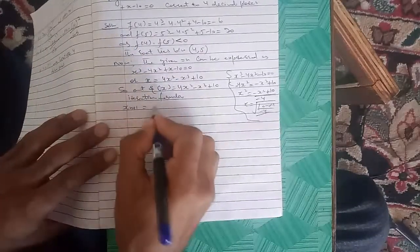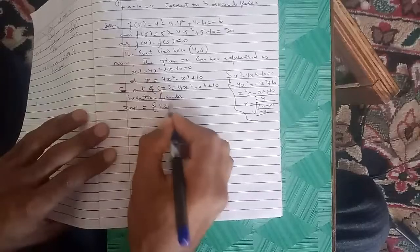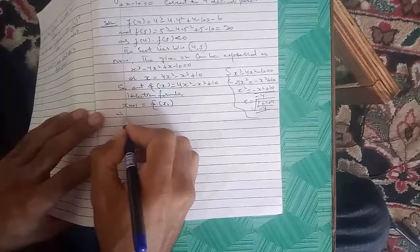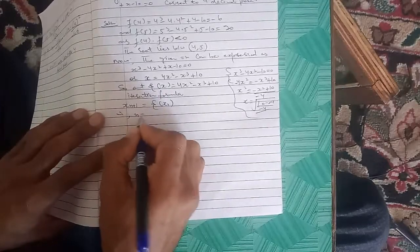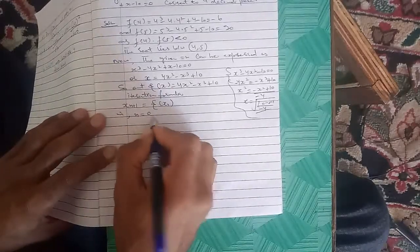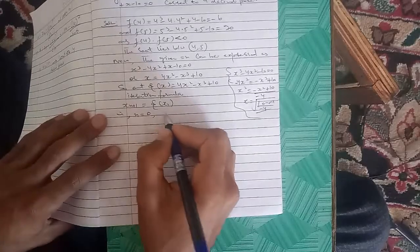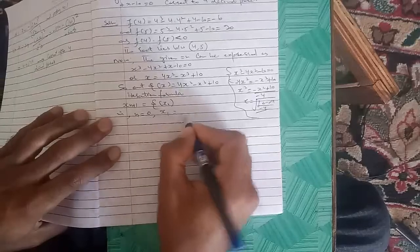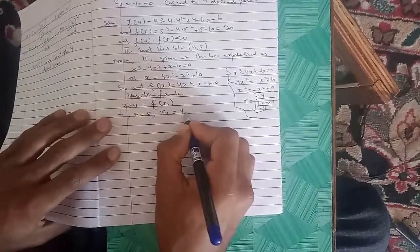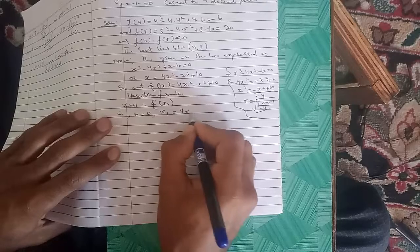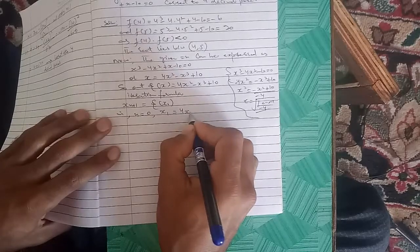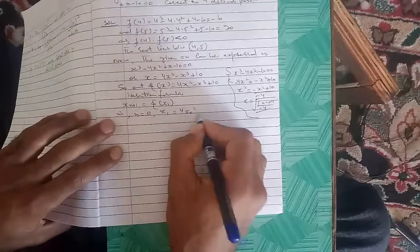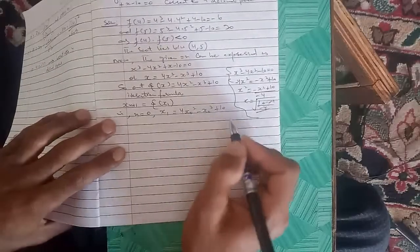x_{n+1} equals φ(x_n). Therefore, by putting n equals 0, x₁ equals φ(x₀) = 4(x₀²) - (x₀)³ + 10.